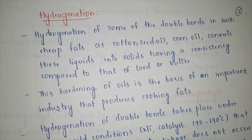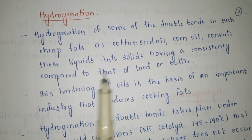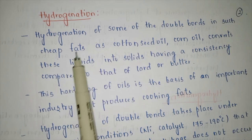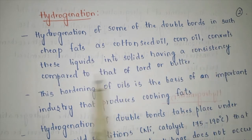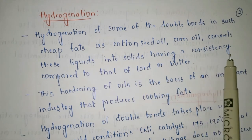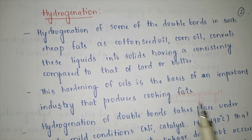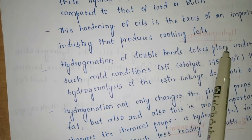The next concept is hydrogenation. Unsaturated systems like oleic acid and linoleic acid contain double bonds. In hydrogenation, those double bonds are converted into single bonds — we reduce the double bond to a single bond. Hydrogenation of some double bonds in cheap fats such as cottonseed oil and corn oil converts these liquids into solids having a consistency comparable to lard or butter. Dalda is one example.